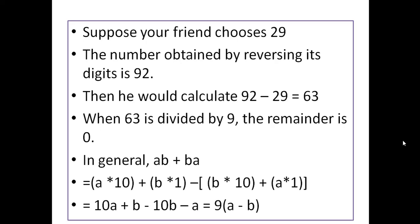Suppose your friend chooses 29. After reversing, it is 92. Since 92 is bigger, we compute 92 minus 29, which equals 63. When 63 is divided by 9, the remainder is 0 — 63 is divisible by 9.